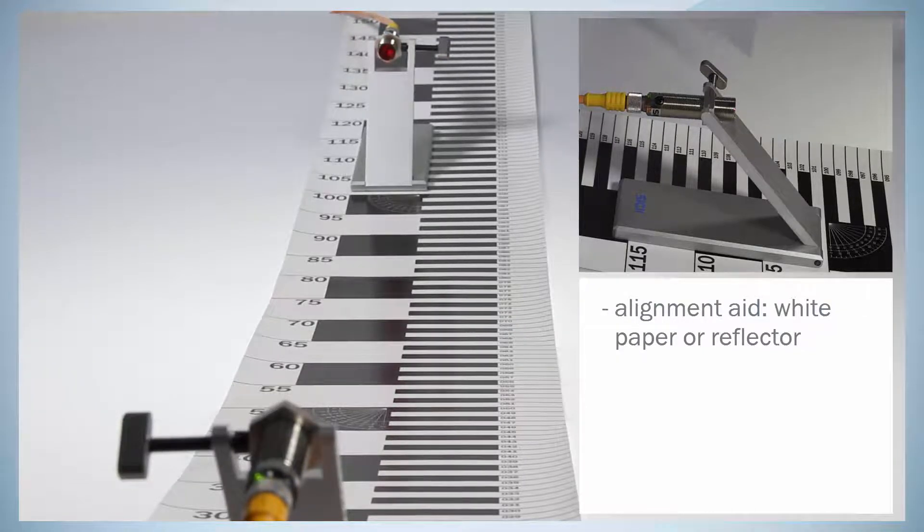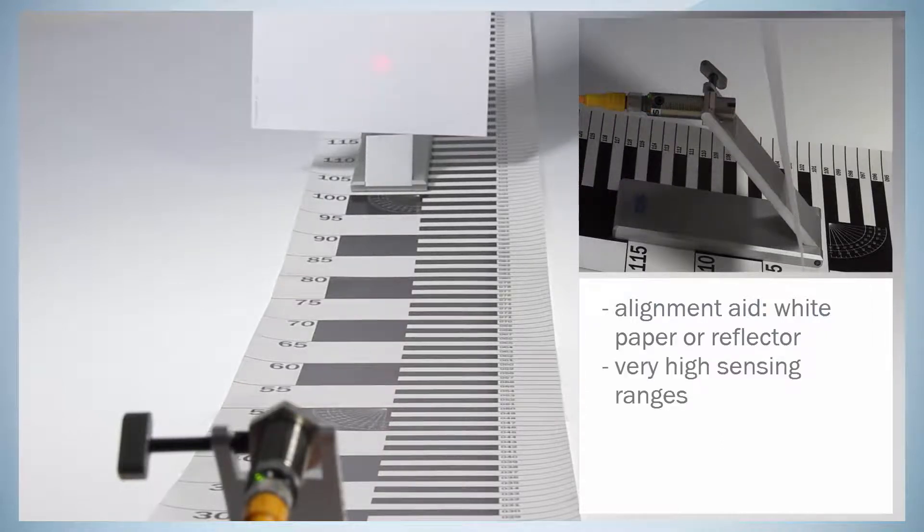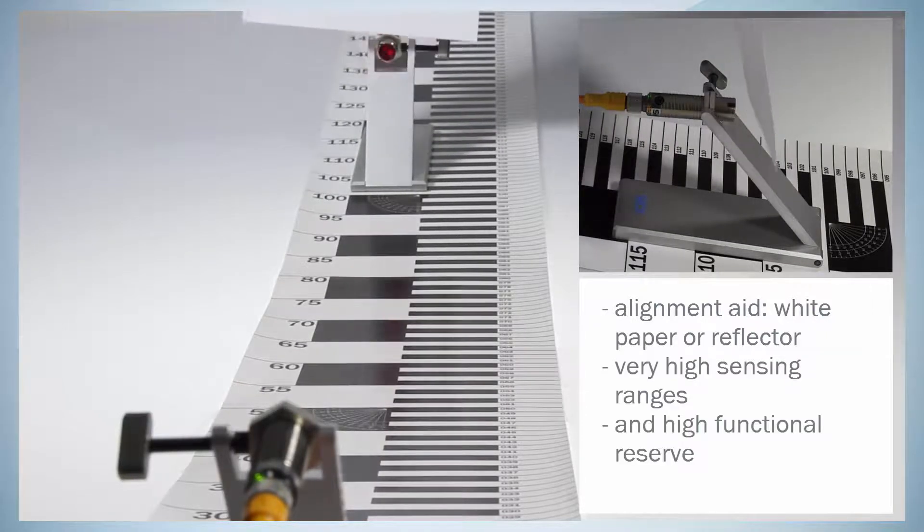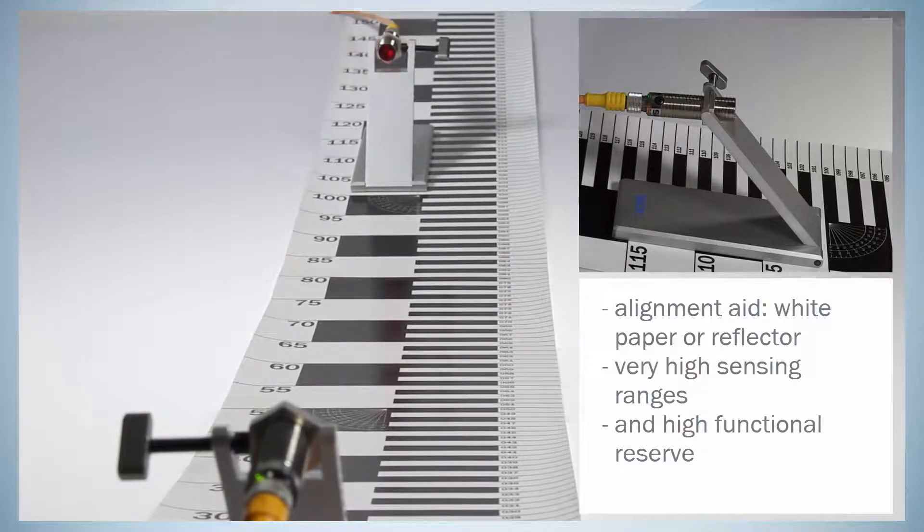A well-aligned through beam system offers the capability to reach higher sensing ranges and higher functional reserve compared to a reflex or proximity sensor.